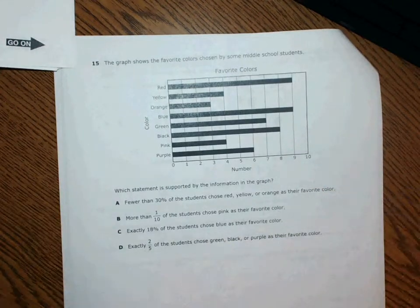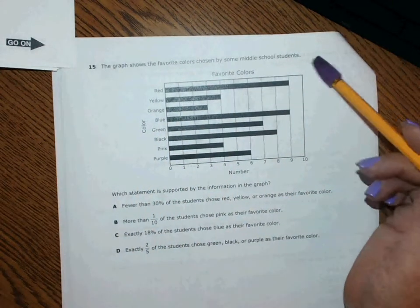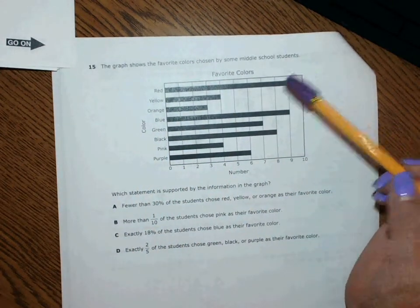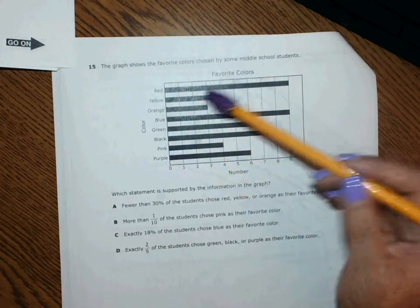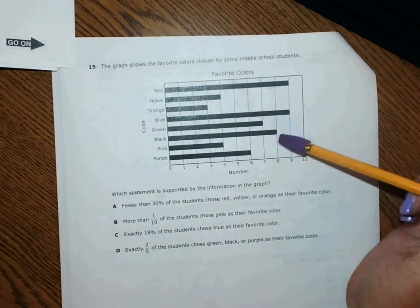Number 15 says the graph shows the favorite colors chosen by some middle school students. We have all of these colors and we have bars that represent each one.